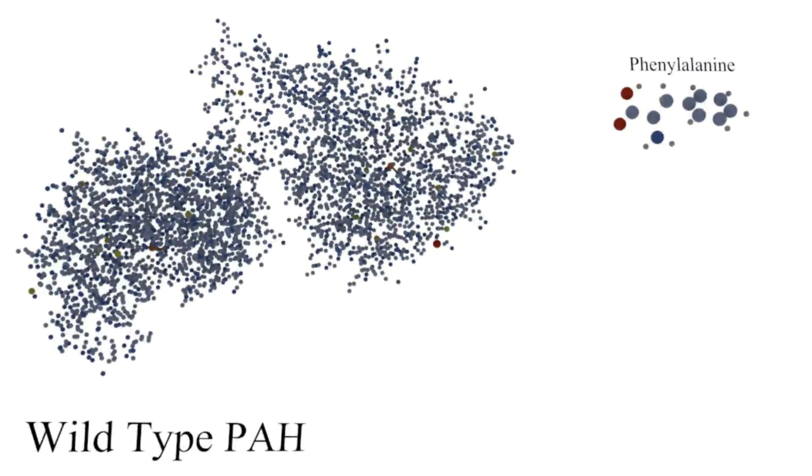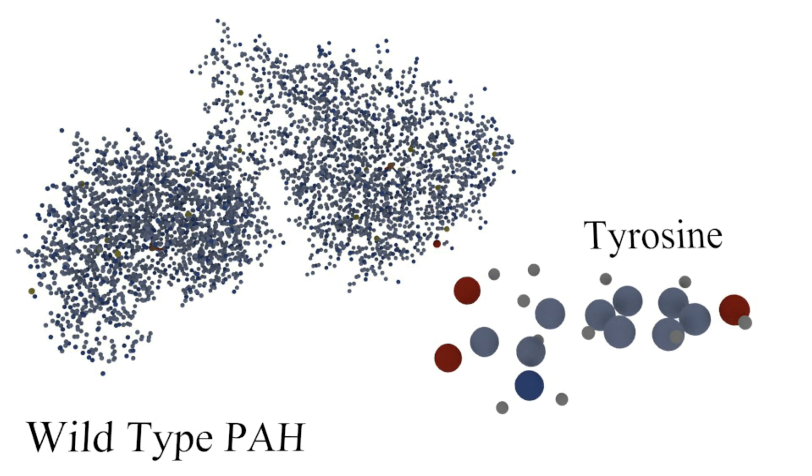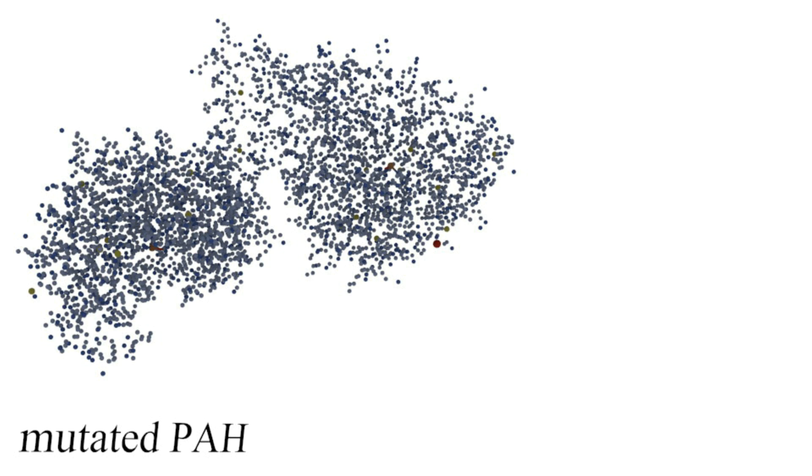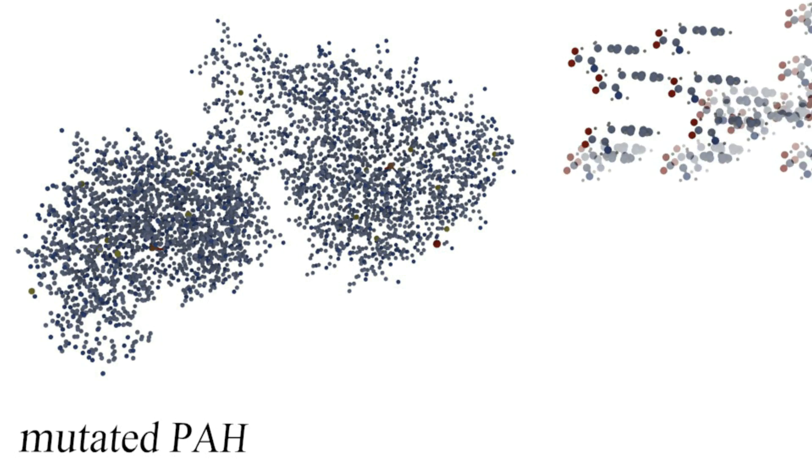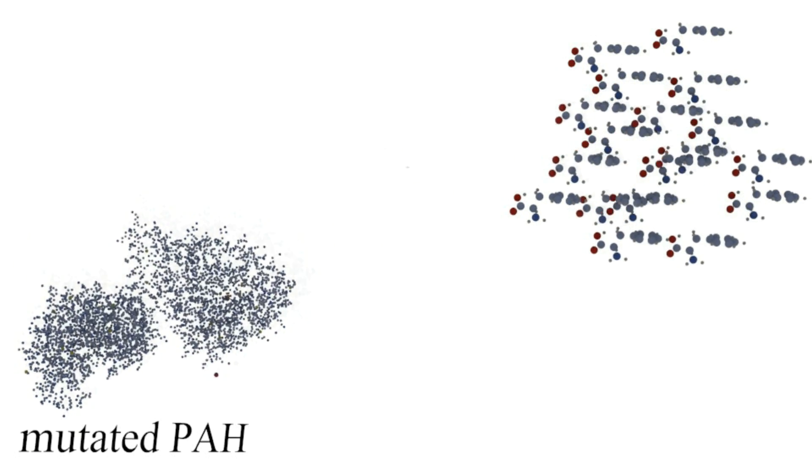What you're about to see is the molecular structure of the gene products responsible for these effects. Normally in those with the wild type allele, an enzyme produced by the PAH gene catalyzes the conversion of the amino acid phenylalanine to tyrosine. Conversely, individuals with the mutated version of the PAH gene have low levels of the PAH enzyme, resulting in buildup of phenylalanine. This buildup of phenylalanine has a multitude of effects.